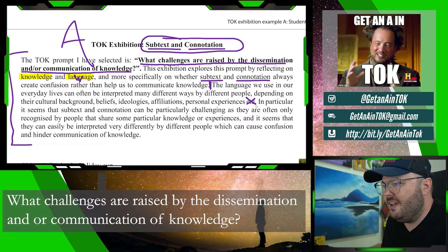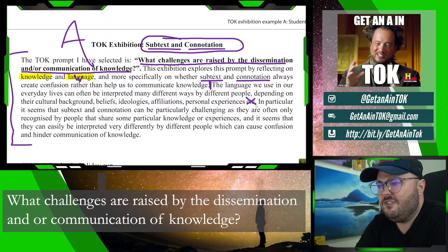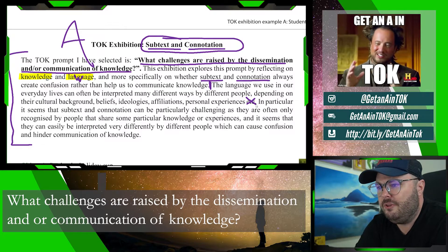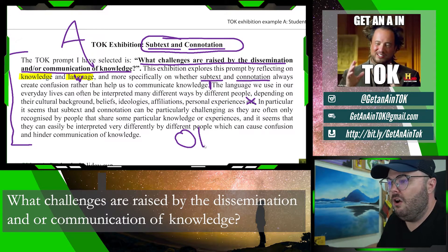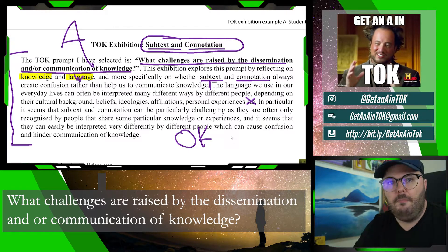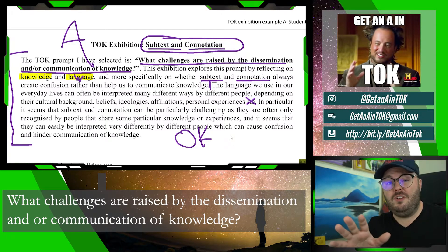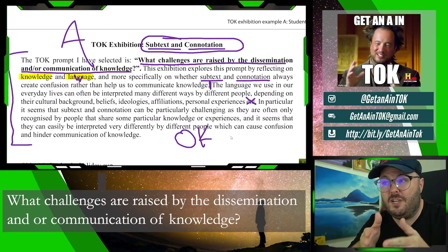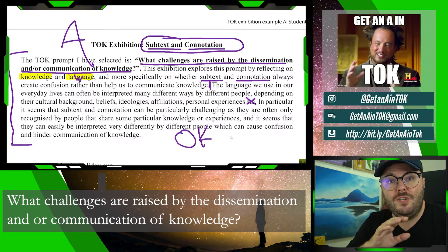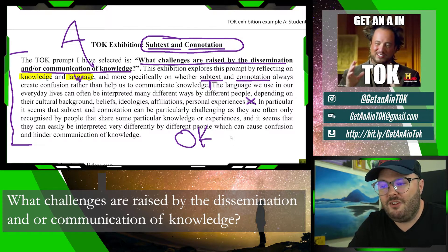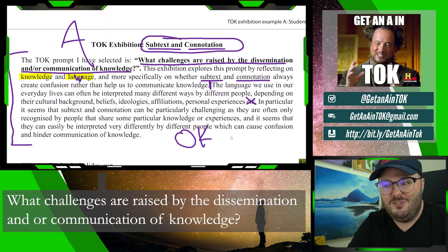Don't ever say 'et cetera' in a paper. The rest of the introduction argues that subtext and connotation can be particularly challenging because they are often only recognized by people who share some particular knowledge or experiences, and that they can easily be interpreted very differently by different people, which can cause confusion and hinder communication of knowledge. The reason it works so well is it's very specific — it says all three responses are going to take this specific approach of talking about subtext and connotation creating confusion, a theme that holds it all together in 126 words.